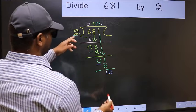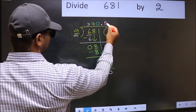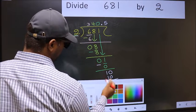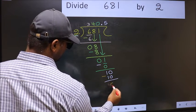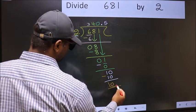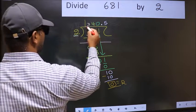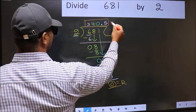So, 10. When do we get 10 in 2 table? 2 fives, 10. Now, you subtract. 10 minus 10, 0. So, this is our remainder. And, this is our quotient.